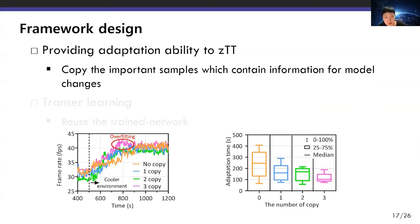The left figure shows the frame rate when the environment changes from a warm indoor to a cool outdoor environment with our system. As the number of sample copies increases, adaptation gets faster. However, for three or more copies, we observed that overfitting causes excessive resource usage. As shown in the figure on the right, even with only one sample copy, the adaptation time reduces by half.